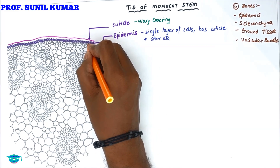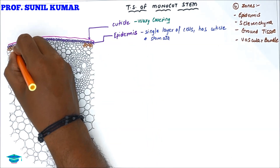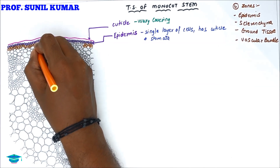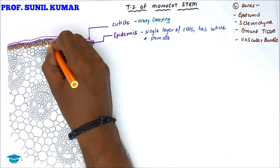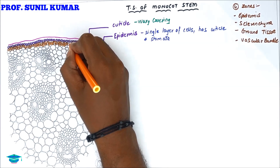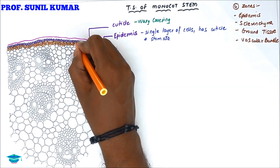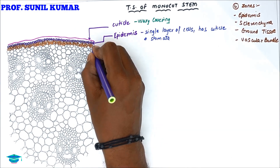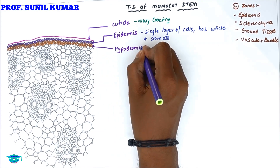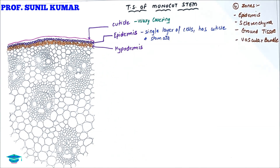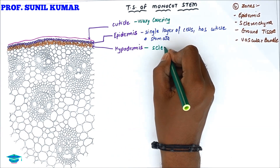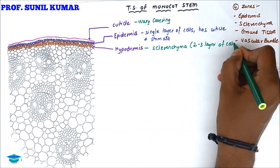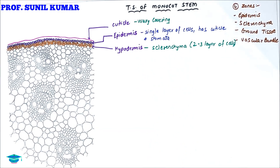Below epidermis we find a specialized layer called hypodermis. This hypodermis is made up of sclerenchyma cells, or we can say sclerenchymatous tissue, which is two to three layers of cells.